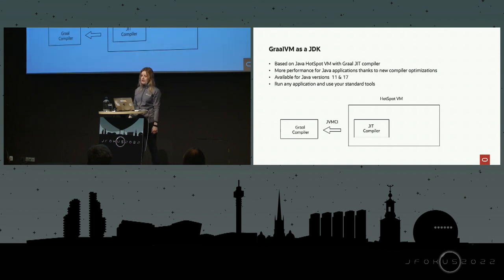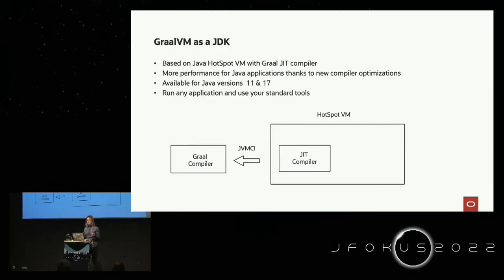Under the hood, when you get GraalVM builds it's the same Java HotSpot VM, just with a different compiler — the Graal compiler — plugged in via the JVM compiler interface. Everything else is the same Java HotSpot VM you get with OpenJDK or other builds. It has a new compiler so you get more performance, and we have builds available for Java versions 11 and 17.